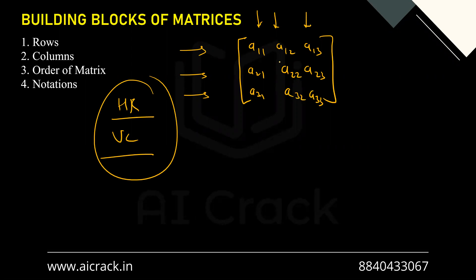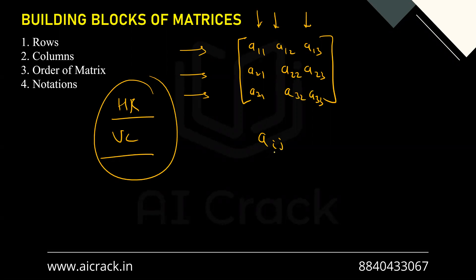Now, for the element aij, 'i' represents the row in which the element is present and 'j' represents the column. So a11 tells us the element is in the first row and first column; a12 tells us first row, second column. The first index is always the row, and the second is always the column.